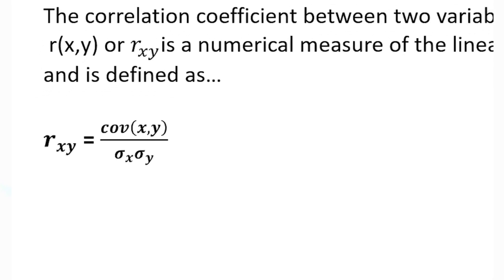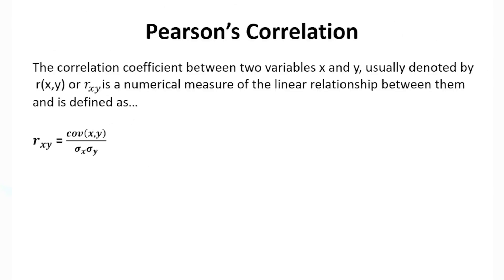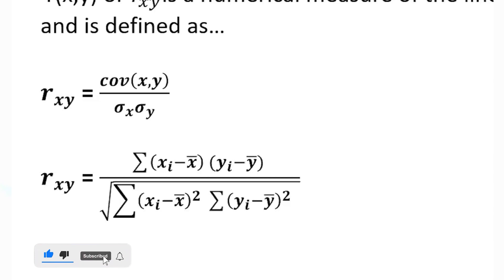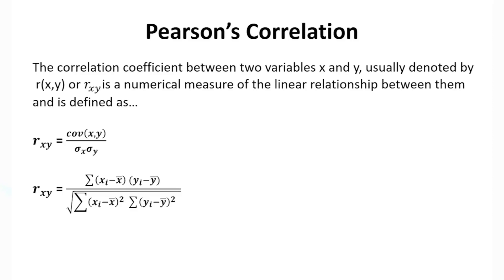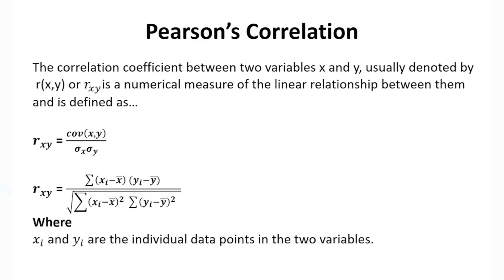Pearson's r is calculated as a ratio of the covariance of x and y divided by the standard deviation of x and the standard deviation of y. When it comes to one variable, we talk about variance; when it comes to two paired variables, we talk about covariance. So Pearson's correlation is a scaled form of covariance. If we plug in the values of covariance and standard deviations into the formula, we get the simplified formula for calculating the Pearson's correlation coefficient. The xi and yi values represent every single paired data point, and x-bar and y-bar represent the averages of the two variables.